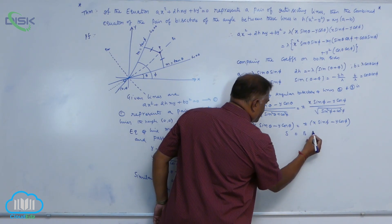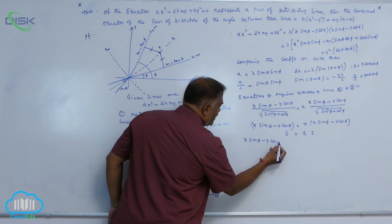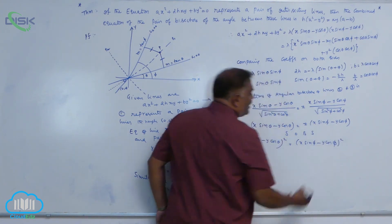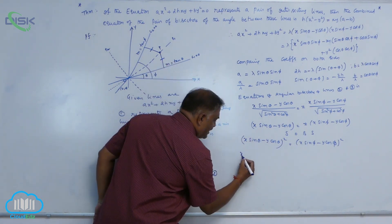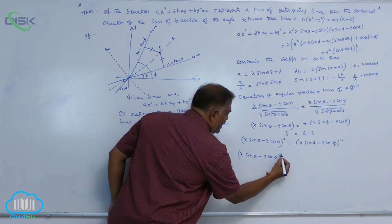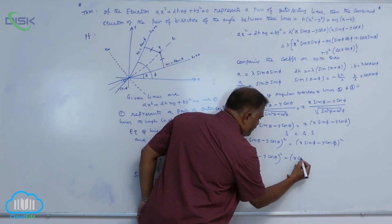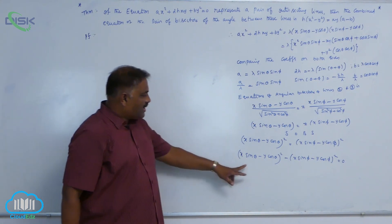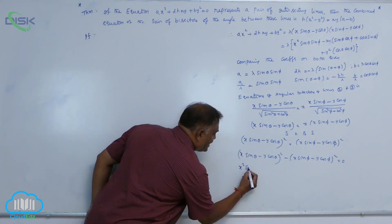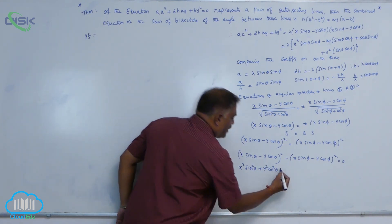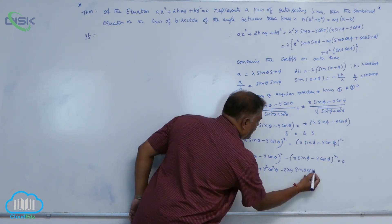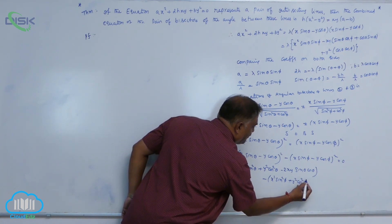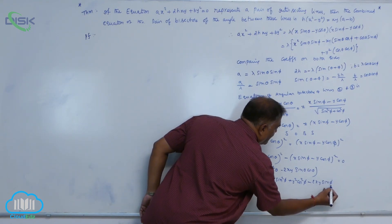Squaring both sides: (x sin θ - y cos θ)² = (x sin φ - y cos φ)². Bringing everything to one side: (x sin θ - y cos θ)² - (x sin φ - y cos φ)² = 0. Expanding: x² sin²θ - 2xy sin θ cos θ + y² cos²θ - (x² sin²φ - 2xy sin φ cos φ + y² cos²φ) = 0.